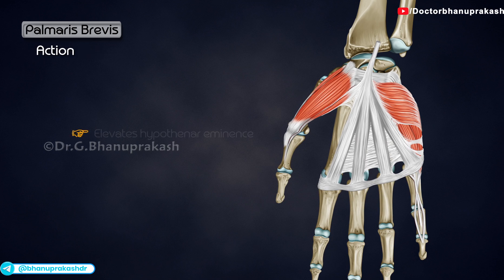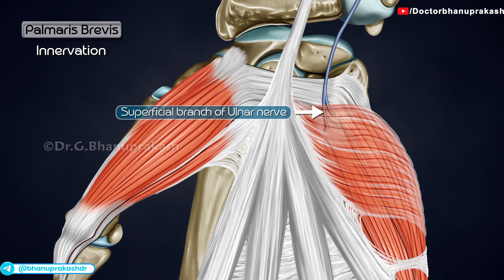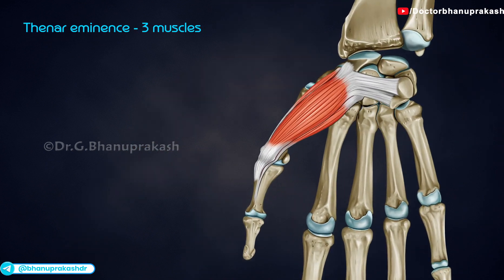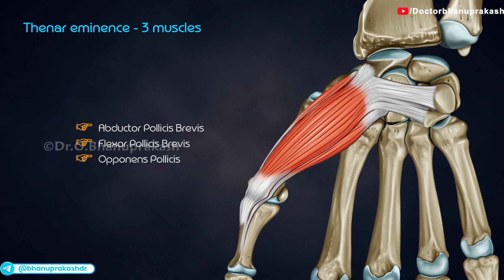It elevates and tenses the hypothenar eminence, thereby increasing grip power, and is innervated by the superficial branch of the ulnar nerve. The thenar eminence comprises three muscles: abductor pollicis brevis, flexor pollicis brevis, and opponens pollicis.